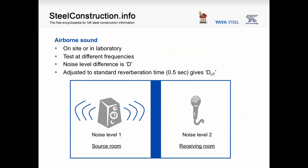Airborne sound insulation can be measured on site or in a laboratory. The basic test procedure involves creating a noise in the source room and then measuring the sound level in the adjacent receiving room. The noise is created at different frequencies to reflect the different performance at different frequencies. The difference between the two noise levels in the two rooms is termed D. This result is normally adjusted for a standard reverberation time of 0.5 seconds, and this is given the term D subscript NT.